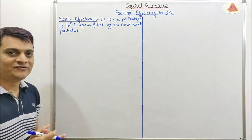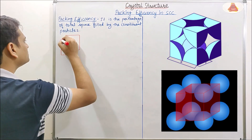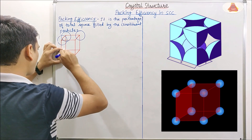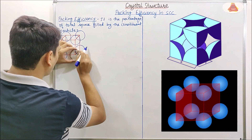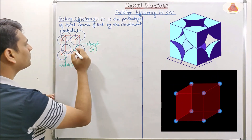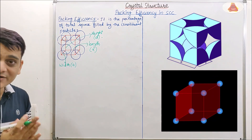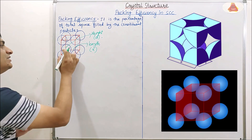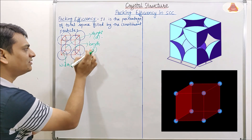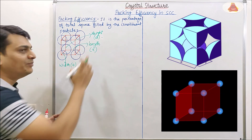For better understanding, first we will draw a unit cell for SCC. As you can see here, this is the diagrammatic representation of SCC which is also visible here. This particular edge length is known as A, that is width. This particular edge length is also equal to A, that is length, and this edge length is height which is also equal to A, because it is a cubic cell.